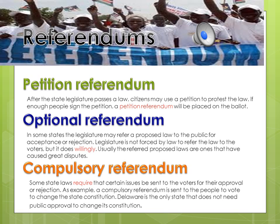After a state legislature passes a law, citizens may protest it. If enough people sign a petition, it's called a petition referendum and it will be placed on the ballot — just because a legislature has passed a law does not mean it's fixed; the people can fight against it. There's also an optional referendum, where the legislature may willingly refer a proposed law to the public for acceptance or rejection, usually because the law is disputed and they want the people to decide.